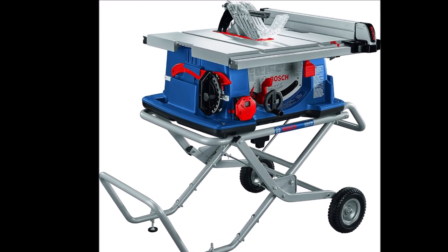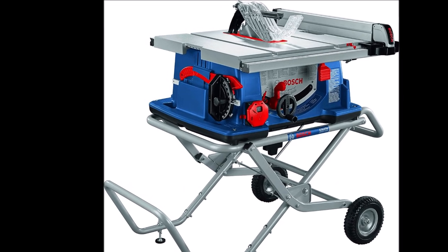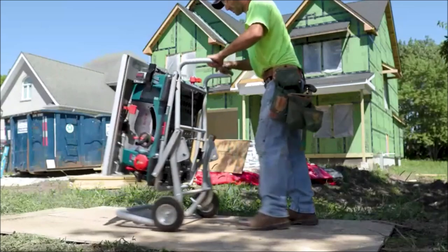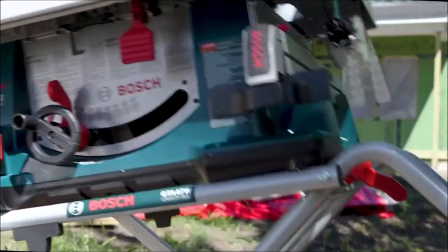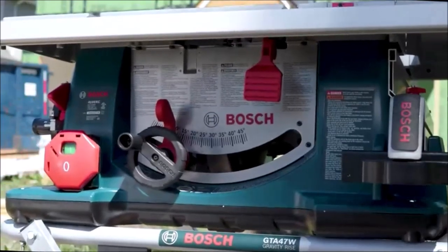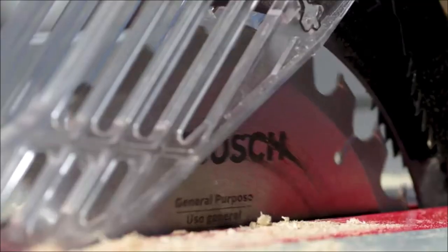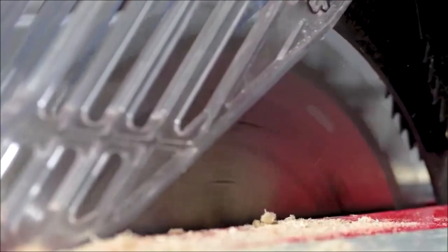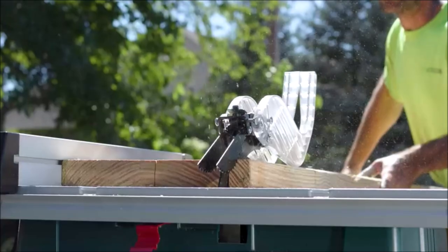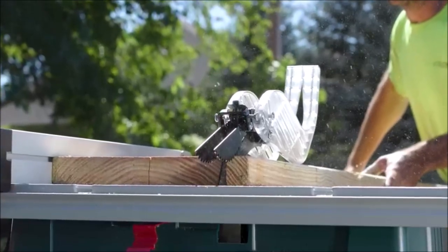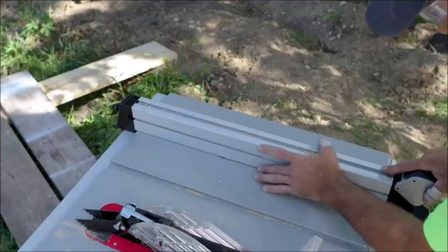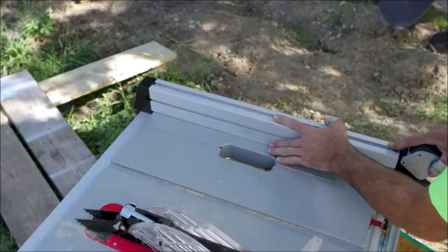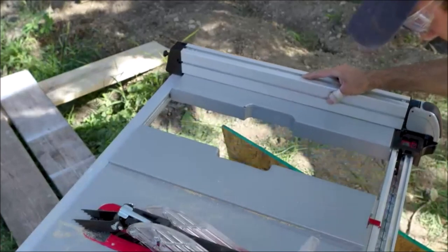The Bosch 10-inch Worksite Table Saw with Gravity Rise Wheeled Stand combines professional rip capacity with excellent portability for efficient performance anywhere. With a powerful 15 amp motor delivering 4.0 maximum horsepower, it ensures outstanding productivity. The saw features soft start circuitry, constant response circuitry for speed maintenance under load, and restart protection. The Square Lock Rip Fence guarantees precision and ease of use with an enhanced auxiliary fence for narrow workpieces.